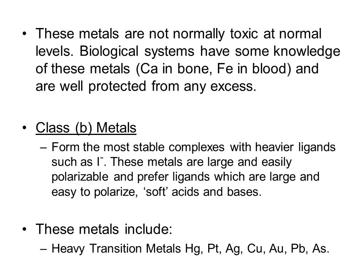Class B metals form the most stable complexes with heavier ligands. These metals are large and easily polarizable, and prefer ligands which are large and easy to polarize — such as soft acids and bases. These metals include heavy transition metals such as mercury, platinum, silver, copper, gold, lead, and arsenic.